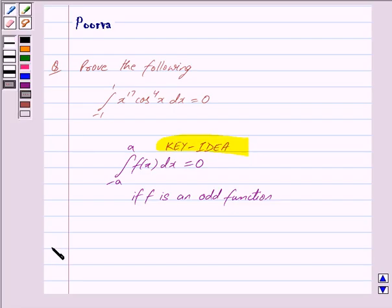Now we begin with the solution. We denote this left hand side by I. So we have I is equal to integral limit is from minus 1 to 1, x raised to the power 17 into cos raised to the power 4x dx.